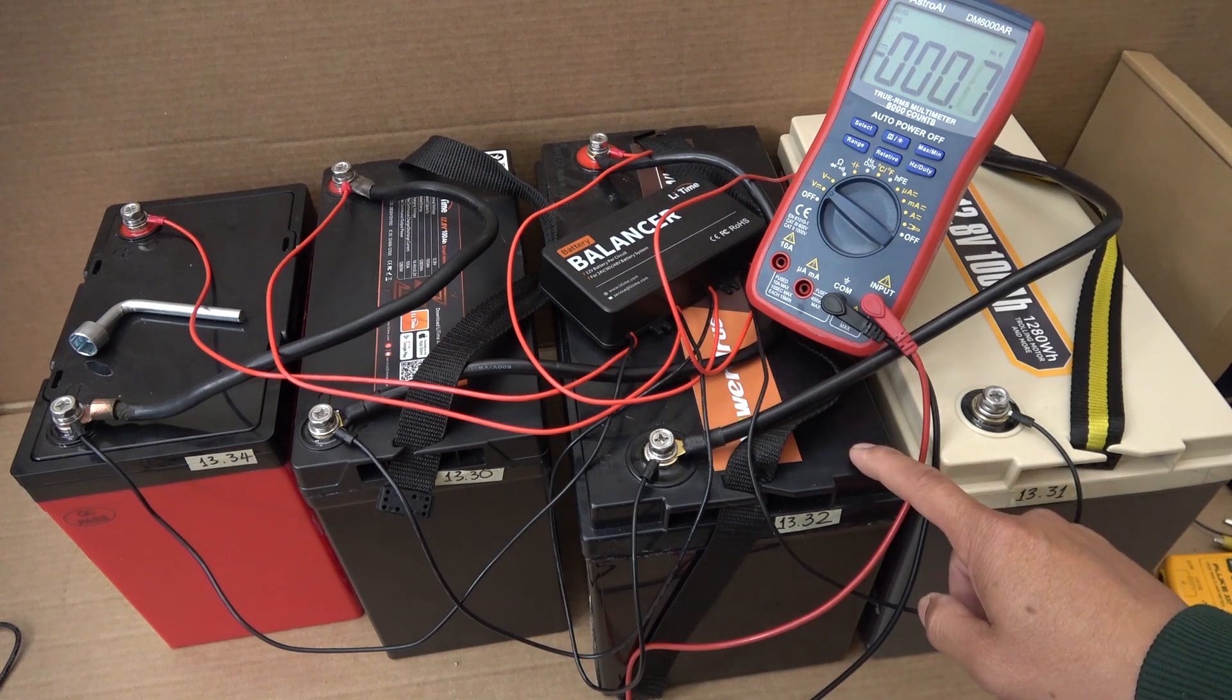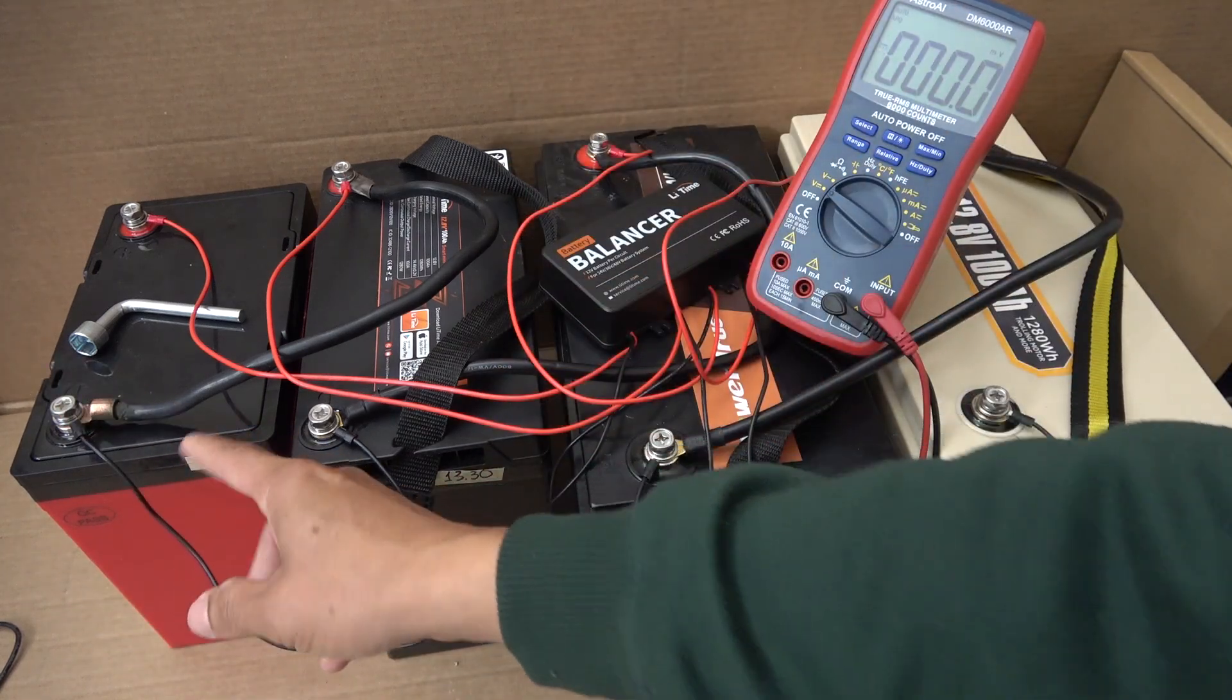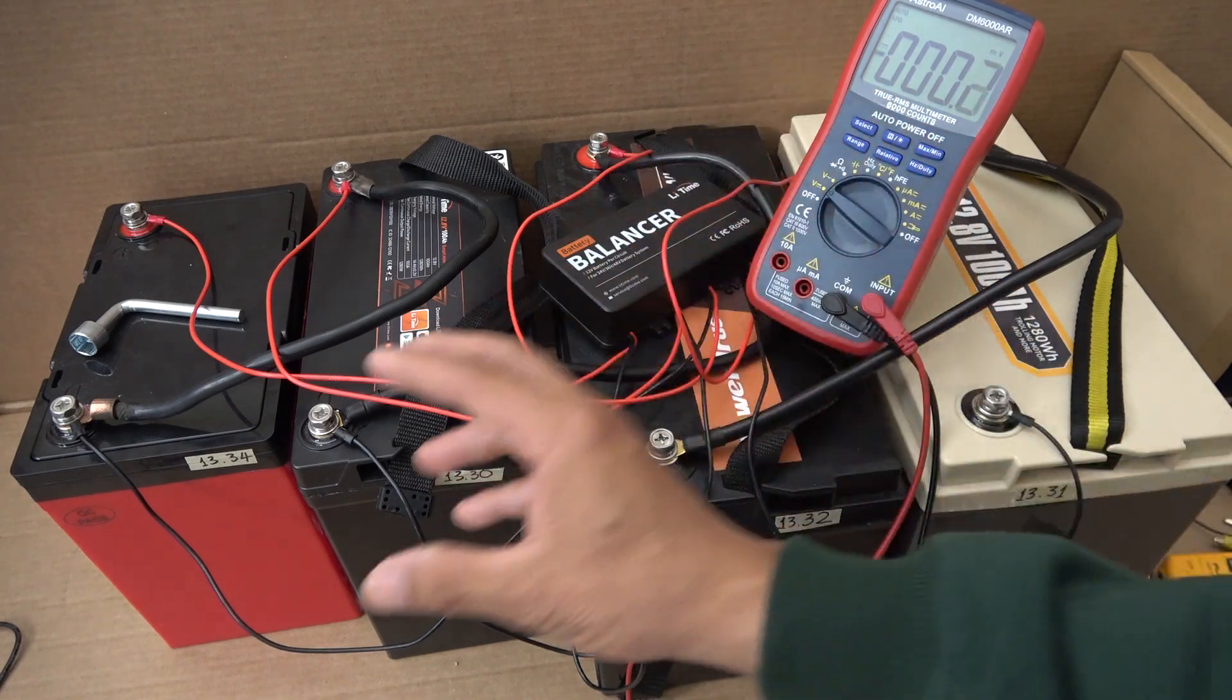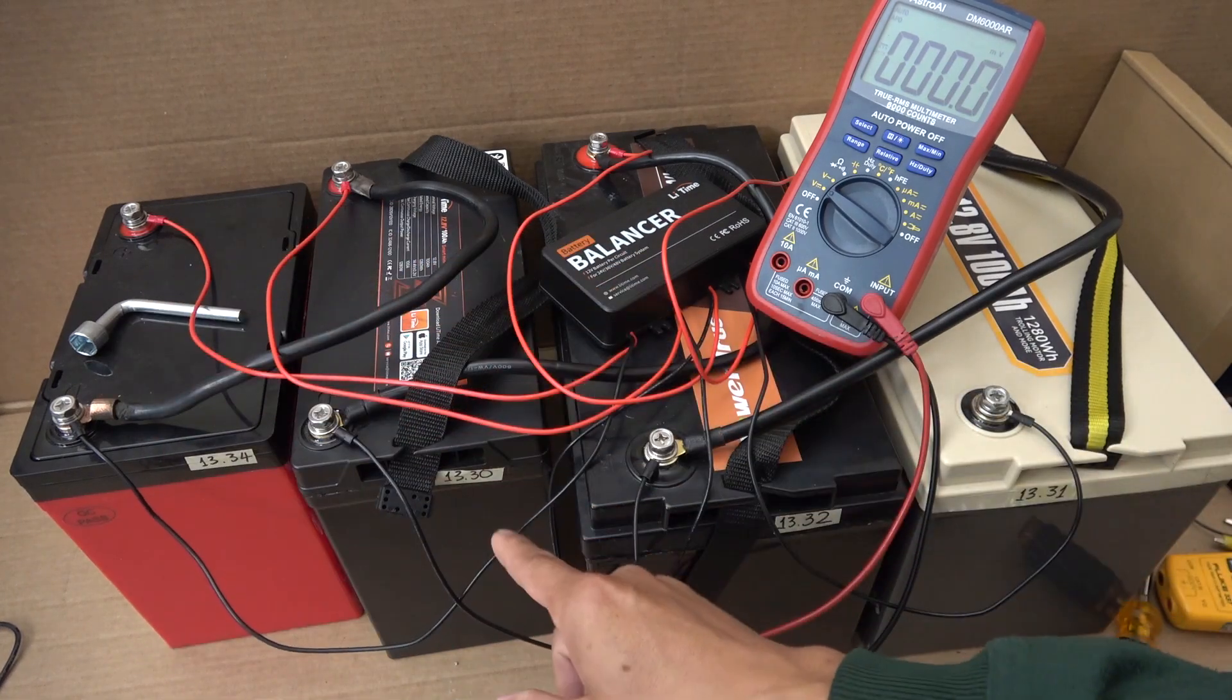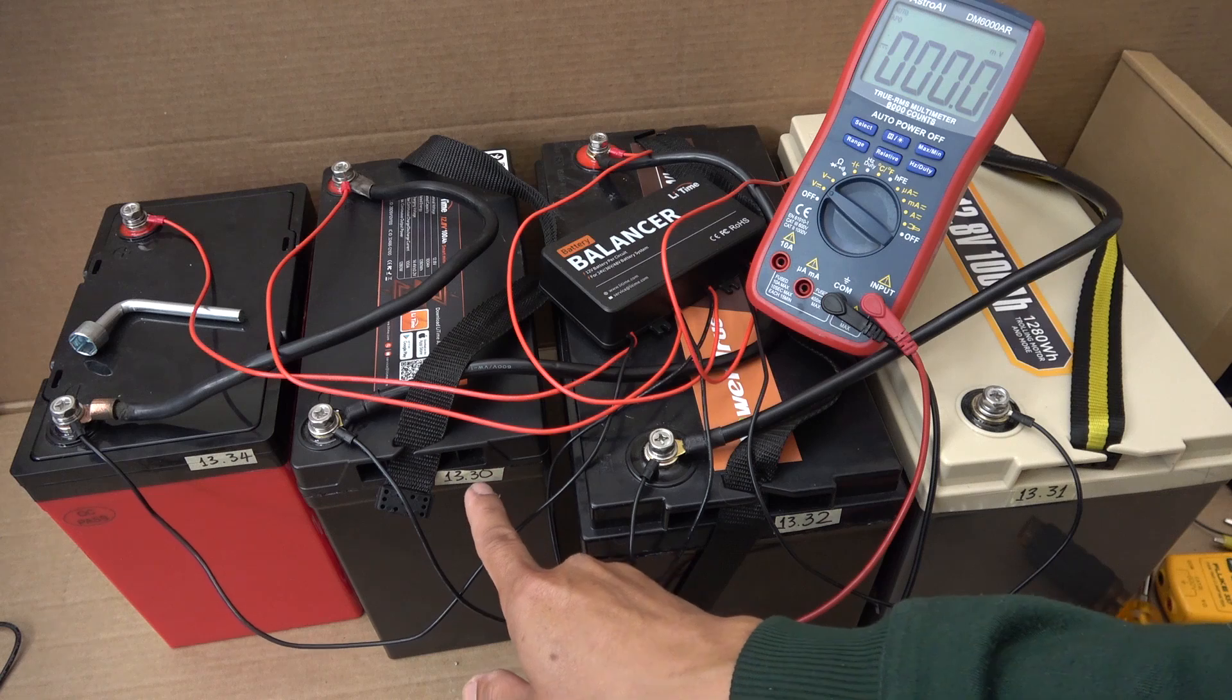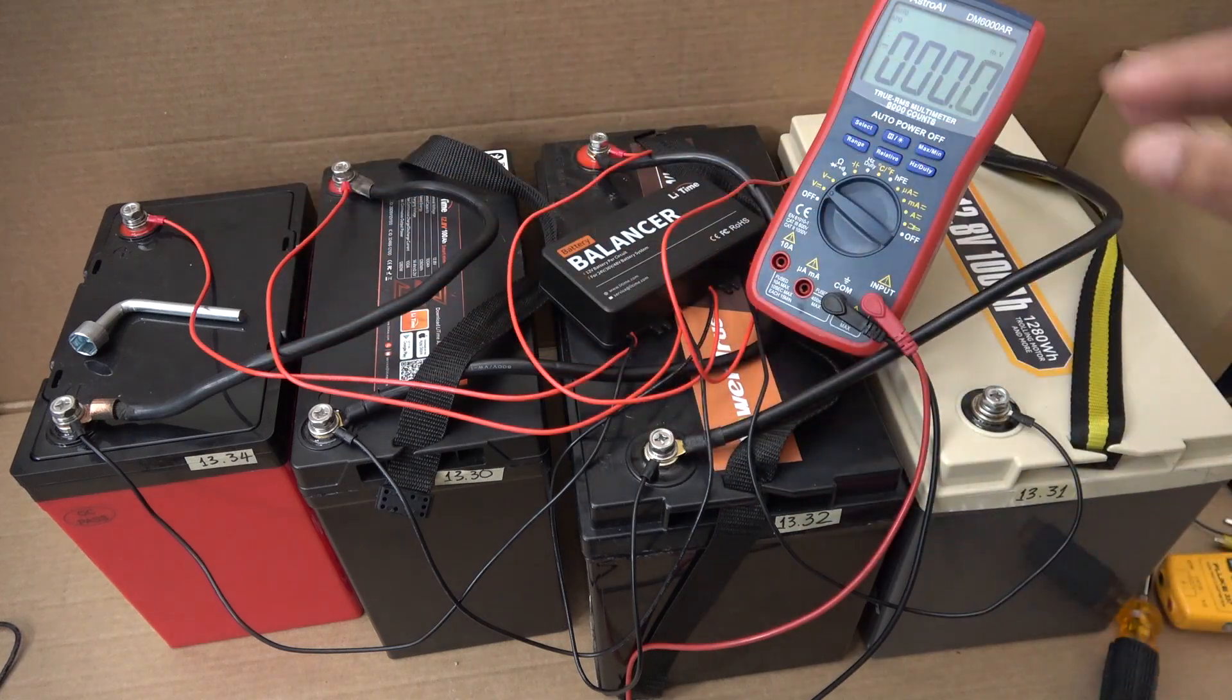And this one stays the same at 13.32. So this balancer doesn't just take power from the higher voltage battery and deplete it down to match with the lower voltage battery. It actually takes the power from the battery with a higher voltage and uses it to charge the battery with a lower voltage. And that's why you see an increase in voltage instead of everything staying the same. This is the lowest voltage of the entire pack, and that's a very efficient way to balance all of this pack together.